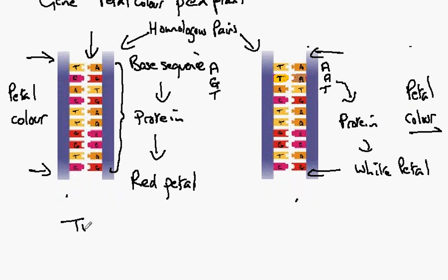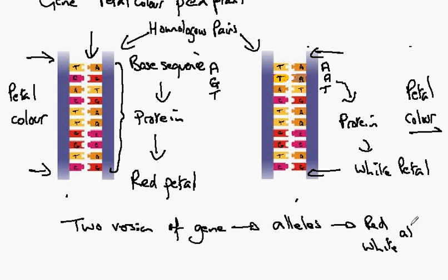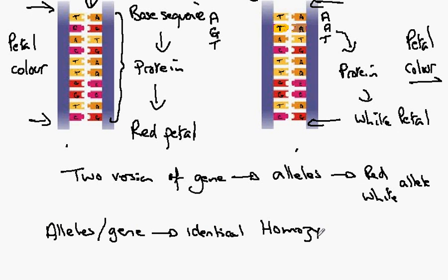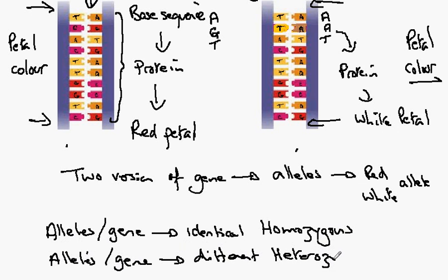So although we have two versions of the gene and these are called alleles, in this case we have a red allele and a white allele. It is possible that the alleles for a gene are different as in the case above, and this is called heterozygous.